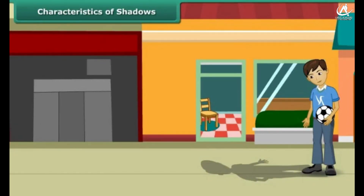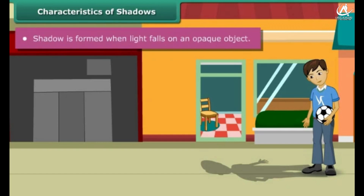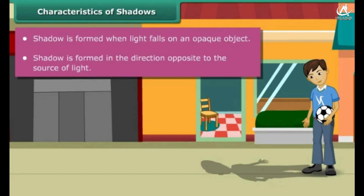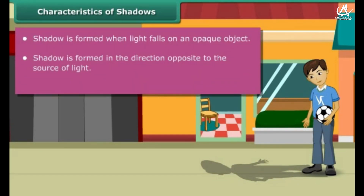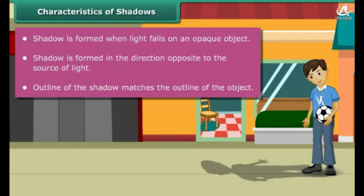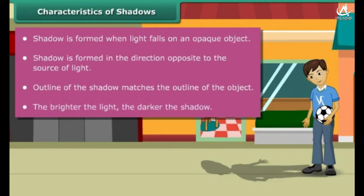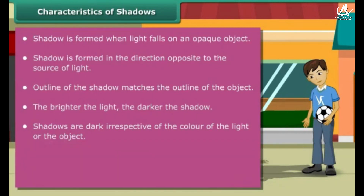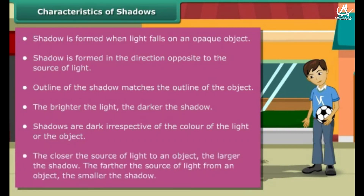Let us list the important characteristics of shadows. A shadow is formed when light falls on an opaque object. A shadow is formed in the direction opposite to the source of light. The outline of the shadow matches the outline of the object. The brighter the light, the darker the shadow. Shadows are dark irrespective of the color of the light or the object. The closer the source of light to an object, the larger the shadow; the farther the source of light from an object, the smaller the shadow.